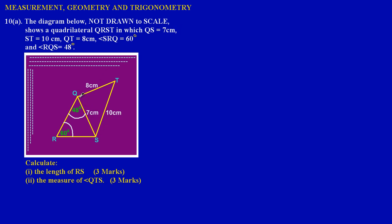QS, from Q to S, is 7 cm — this is the side I'm running my pointer along. ST is 10 cm, running my pointer along that, and QT would be 8 cm. They also gave us some angles: angle SRQ is equal to 60 degrees.